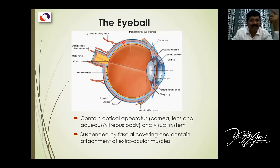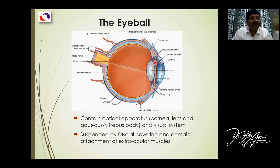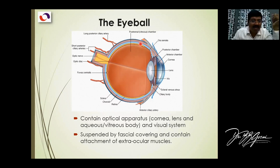This is the sclera, and this is the limbus. Deep to this is the iris. This one is the vascular coat, also known as the uveal coat or uvea. So this is the vascular coat — the uveal tract. Infection of it is known as uveitis. So this is the ciliary body, this is the iris, and this is the choroid — three parts of the vascular coat.